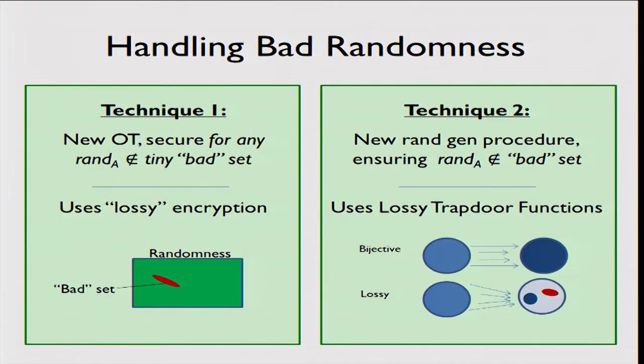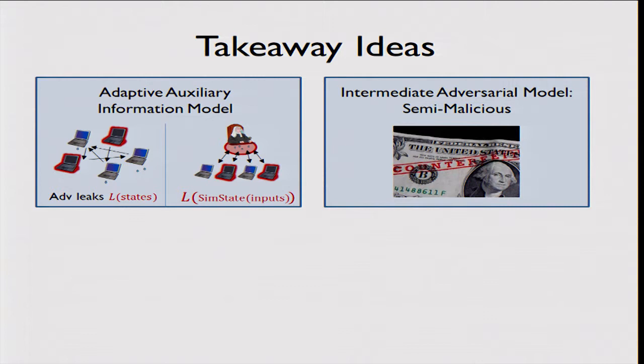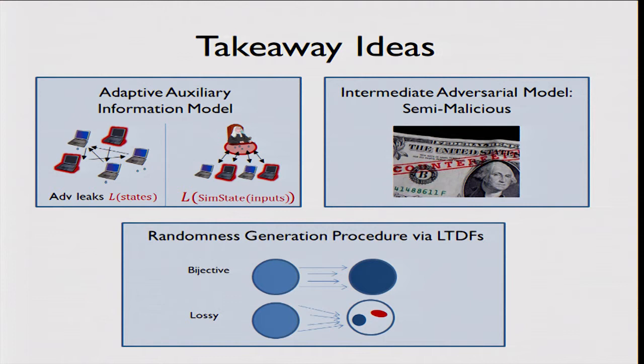Putting these two techniques together is sufficient to achieve semi-malicious oblivious transfer and thus semi-malicious MPC. To summarize the key takeaways: first, the notion of adaptive auxiliary information; second, the intermediate security level of semi-malicious adversaries — similar to other intermediate notions between semi-honest and malicious, but particularly useful here; and third, the new randomness generation procedure via lossy trapdoor functions, which we believe can find applications in other areas as well.